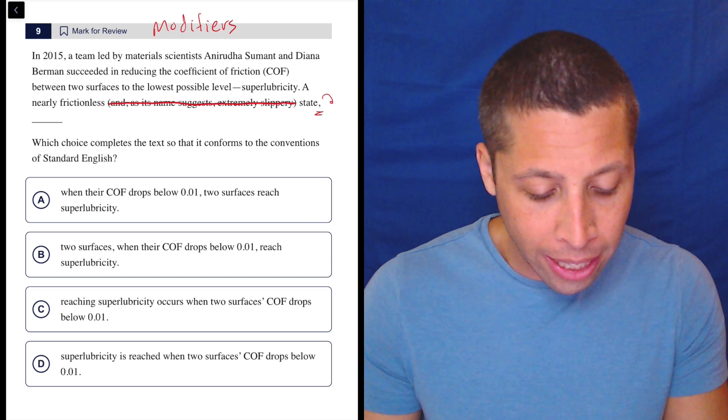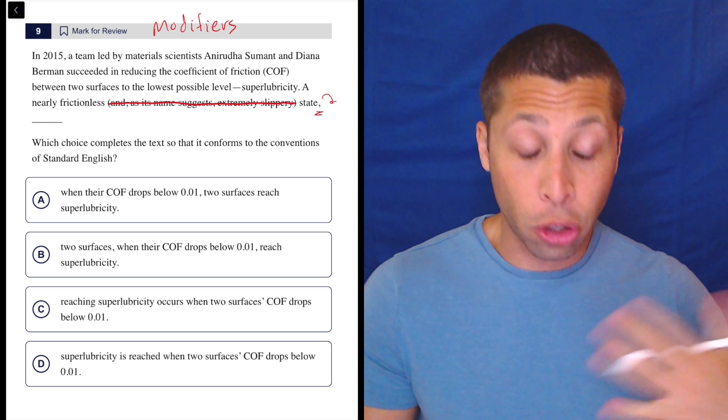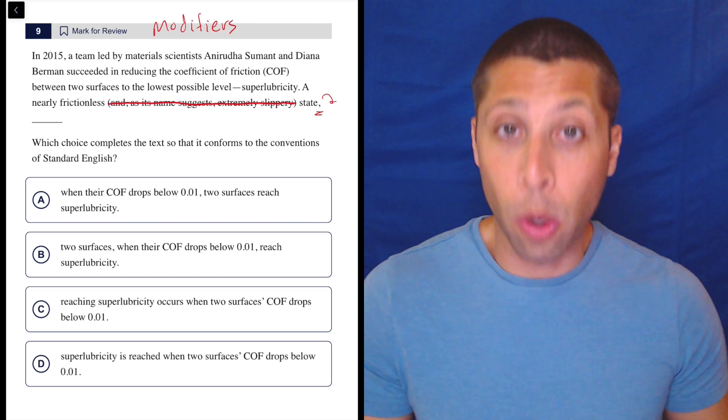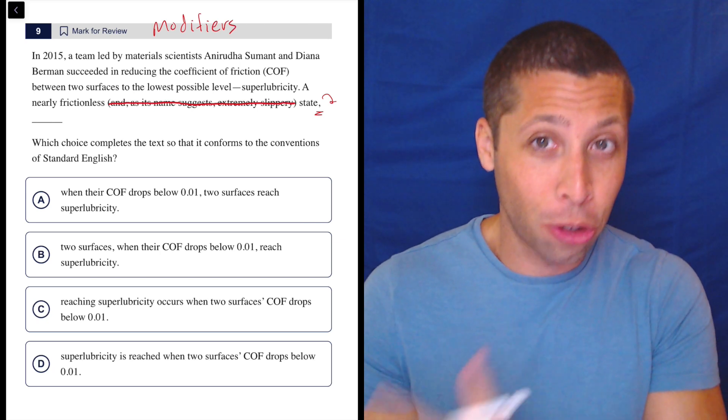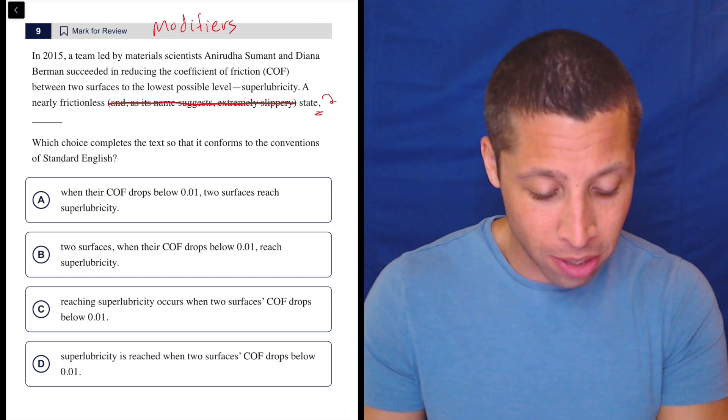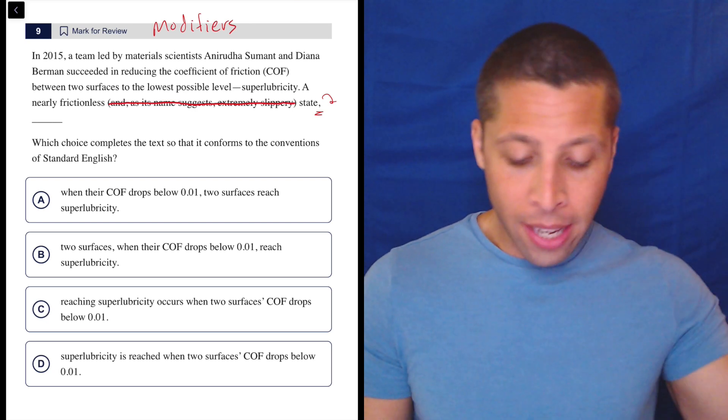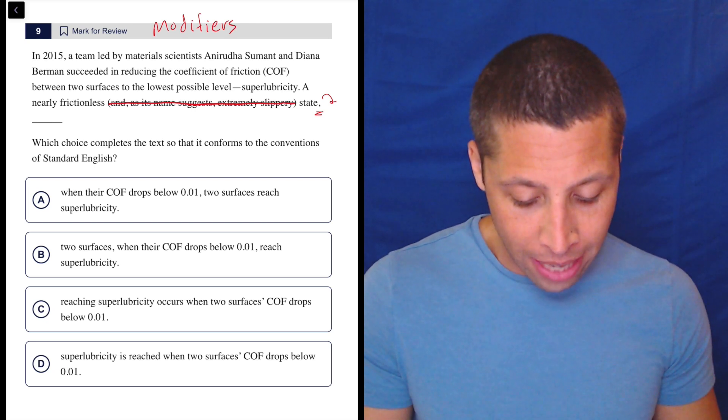And then we have a comma and the thing following that comma needs to be whatever we're talking about. So we're going to turn this modifier, the thing at the beginning, into a question. And the answer to that question should start off our answer choice. So a nearly frictionless state. What is a nearly frictionless state?